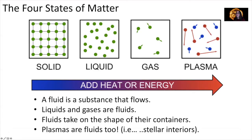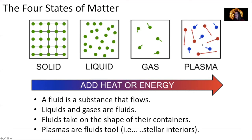There are four states of matter: solids, liquids, gases, and plasmas. As you apply heat or energy to a system, you change the substance from a solid to a liquid to a gas and then to a plasma.